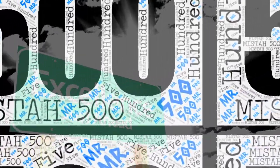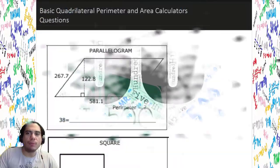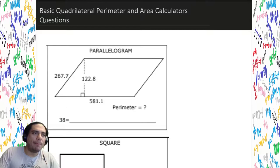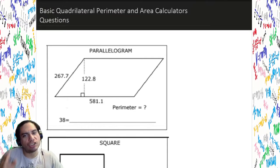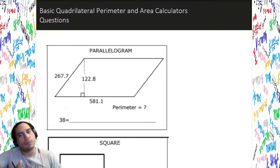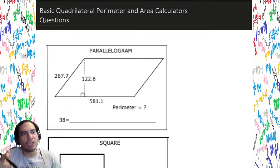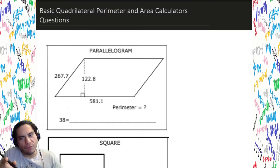Hey, what's going on ladies and gentlemen, it's Mr. 500 here. We're gonna learn the good stuff — a little bit of geometry, basic quadrilateral perimeter and area questions. These are the most basic ones, the easy ones, and we gotta make sure we can handle them because we don't want to get the easy ones wrong.